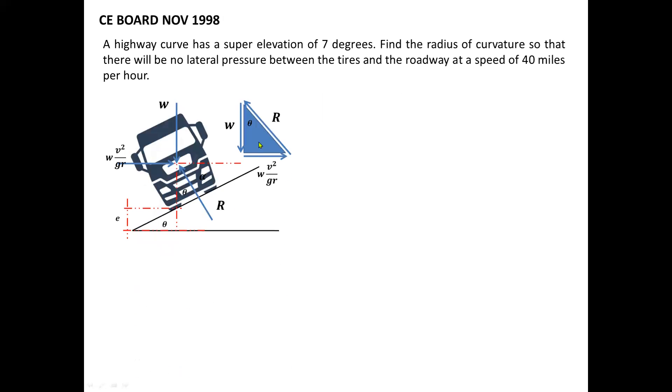Now for the continuation, I have a first sample problem from the board exam dated November 1998 — which I personally experienced when I took the licensure examination. The problem states: a highway curve has a superelevation of seven degrees. Determine the radius of curvature so that there will be no lateral pressure between the tires and the roadway at a speed of 40 miles per hour.